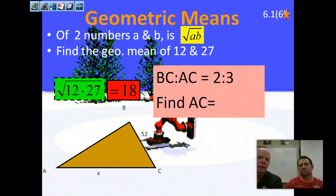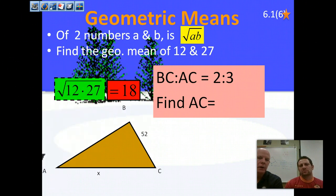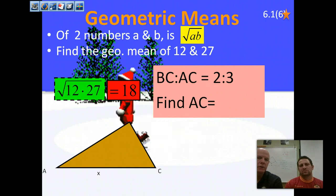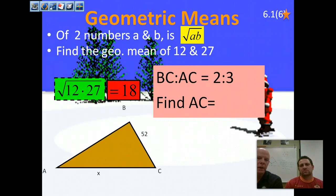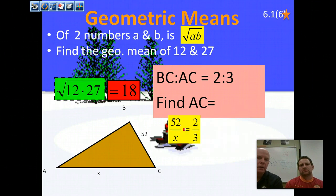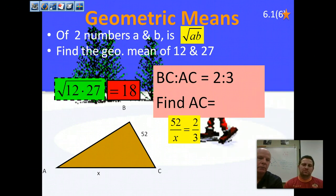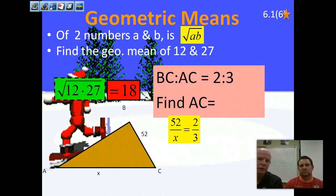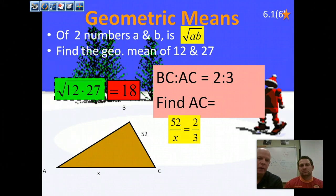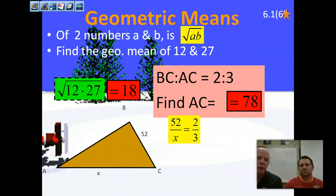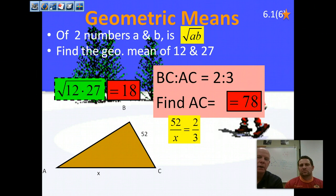If we're asked to find the ratio of BC to AC and told that BC to AC is 2 to 3, and the length of BC is 52, we set up the proportion: 52 over x equals 2 over 3. Order is critical — BC goes on top as the first in the ratio, and x (AC) on the bottom. Cross multiply: 3 times 52 equals 2 times x, so dividing both sides by 2 gives AC equals 78.